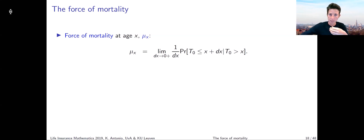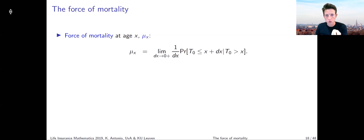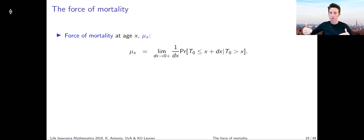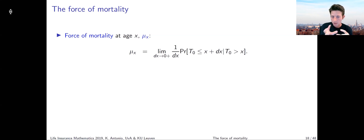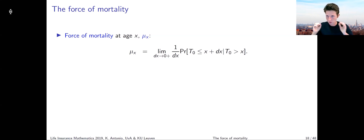So the probability we're looking at is: given that you reached age x, what's the probability you're going to die right after reaching it? What we're going to do is not just work with this probability, but divide it by the length of the interval dx after age x, and take the limit as dx goes to zero — letting the length of this interval become very small.